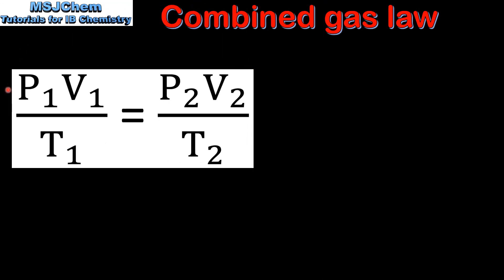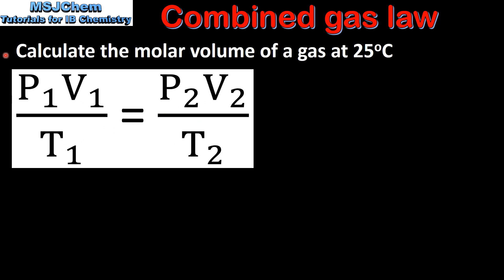And finally we look at the combined gas law. Here we have the equation for the combined gas law: P1 times V1 divided by T1 equals P2 times V2 divided by T2. Next we'll use the combined gas law to calculate the molar volume of a gas at 25 degrees C.